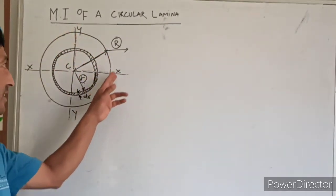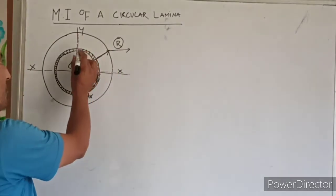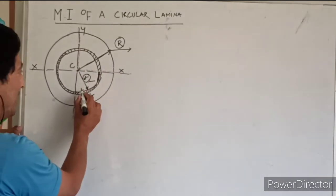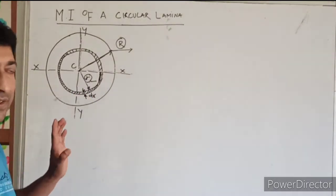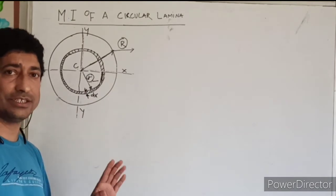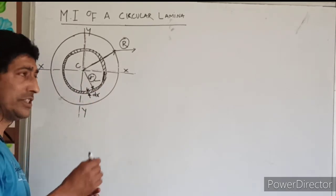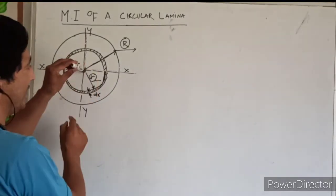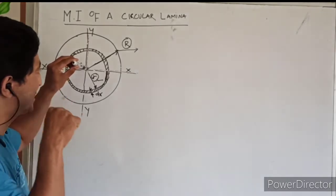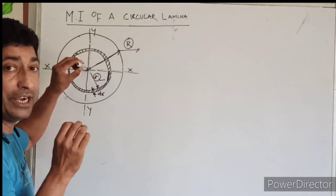This bigger circle is the circular lamina, and its radius is capital R. We have cut an elementary ring out of this bigger circle — that elementary ring has a radius of small r and a thickness of dr. There are two axes passing through the centroid: the x-axis and y-axis. There is also a third axis — this pen represents it — which is the polar axis or z-axis, exactly perpendicular to the centroid of the circle. These three axes are mutually perpendicular to each other.